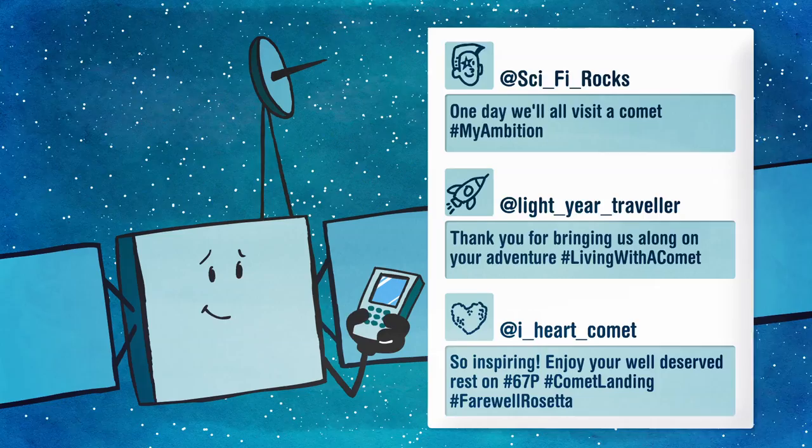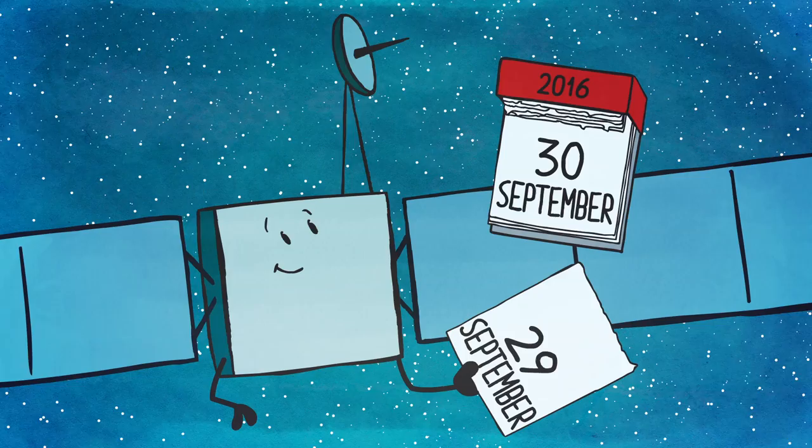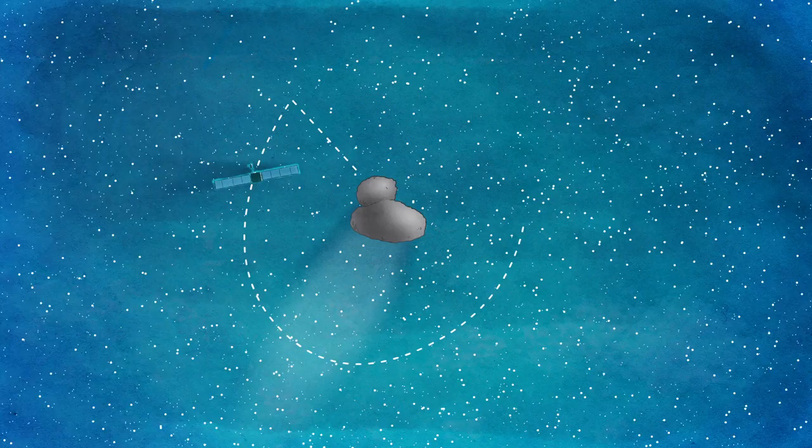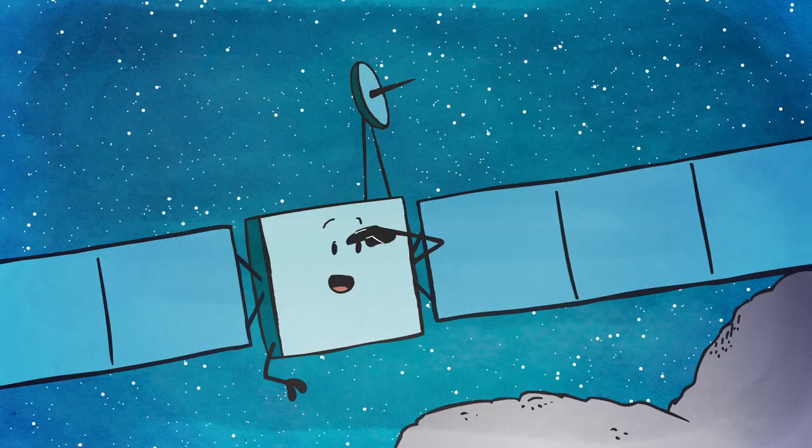Finally, after 786 days at the comet, the last day of her extraordinary adventure arrived. On the 30th of September, 2016, Rosetta started her descent to the surface of the comet. She made unique measurements and took many close-up photos of the wonderful sights, thinking of the future scientific discoveries to come before she touched down on the comet for her well-deserved rest.